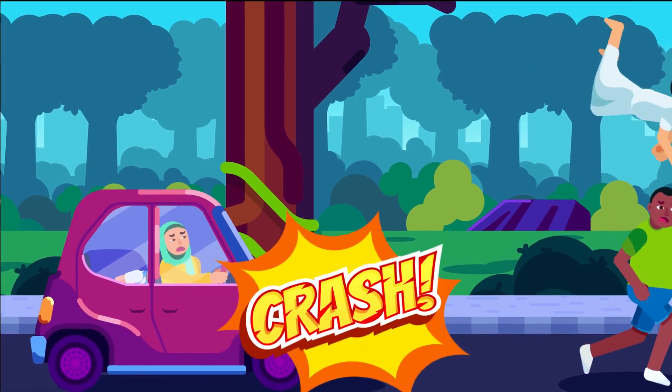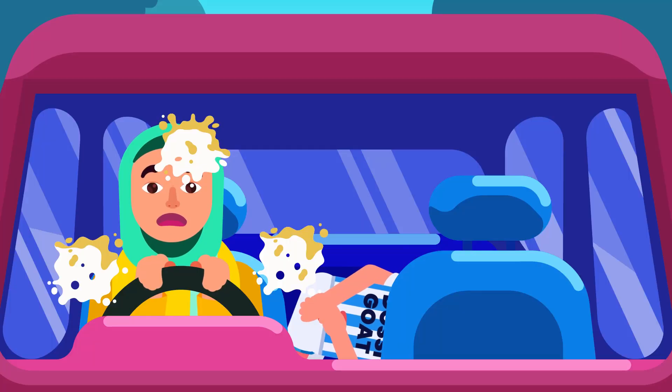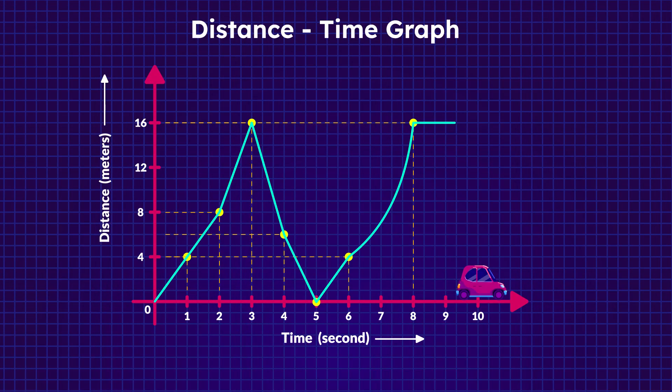Now, how do you visualize the car motion when you stop the car? The car is not moving at all, so the graph is depicted as a horizontal line for a whole second.